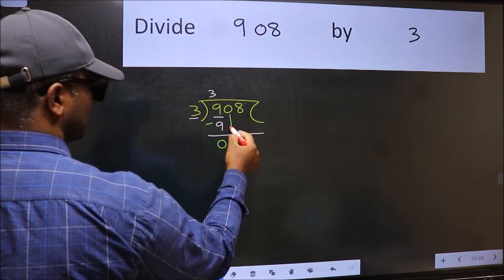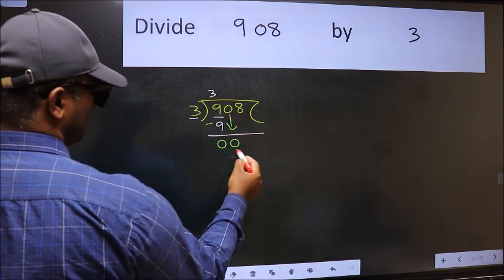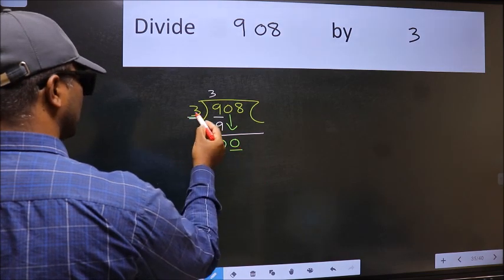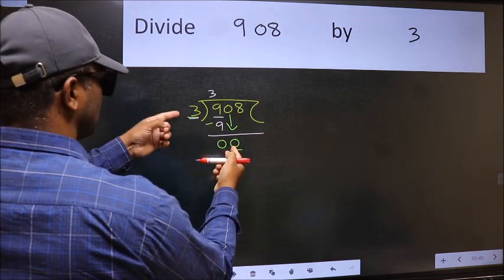After this, bring down the next number beside it. So 0 down. Now here we have 0 and here 3. 0 is smaller than 3.